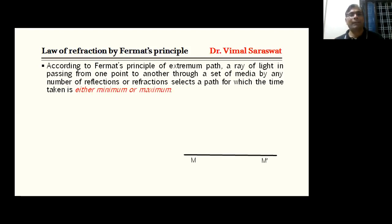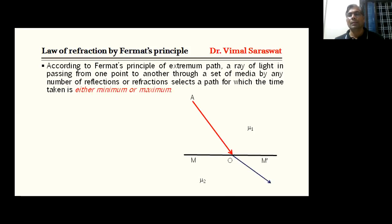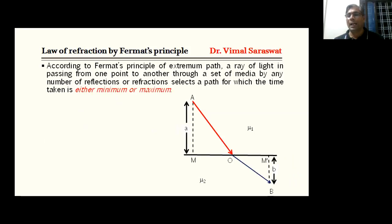Here, M-M' is our reflecting surface. Mu1 is the refractive index of the first medium and Mu2 is the refractive index of the second medium. Now, here we have a point A. A ray of light is incident on the reflecting surface M-M', and the incident ray is AO. AO is reflected by the reflecting surface and the reflected ray is OB. We draw perpendiculars from point A and B on the reflecting surface M-M', represented by AM and BM' respectively. Let AM equal to a and BM' equal to b.